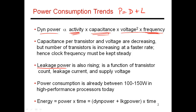The second component is leakage power. When transistors are just sitting there, even if they're not doing any work, as long as they're powered up, there will always be some leakage current slipping from the supply voltage to ground. The total leakage power dissipated is a function of transistor count — how many transistors on the chip are connected to the supply voltage — as well as the leakage current and the supply voltage itself.